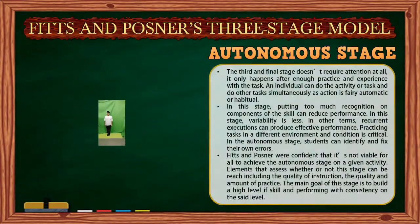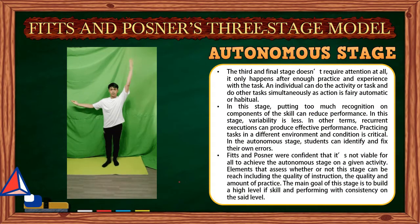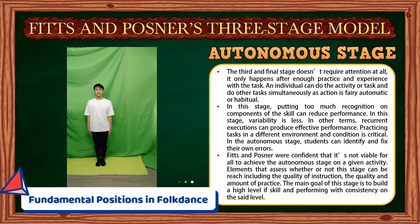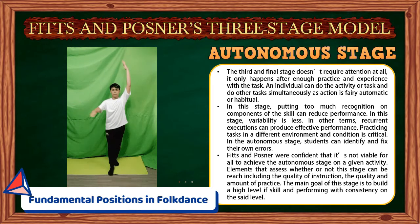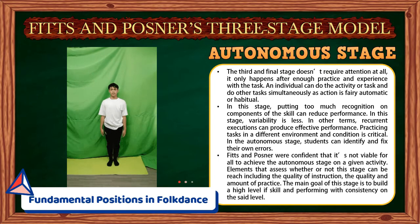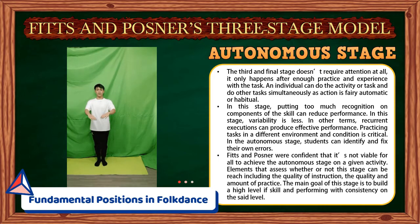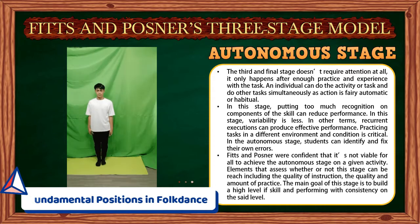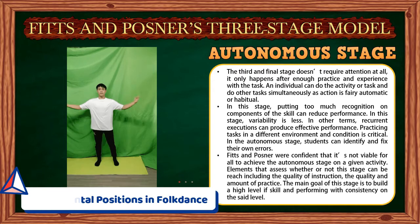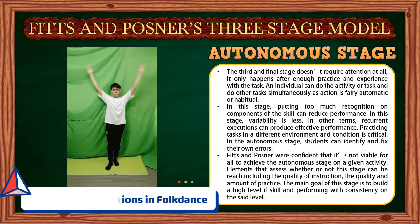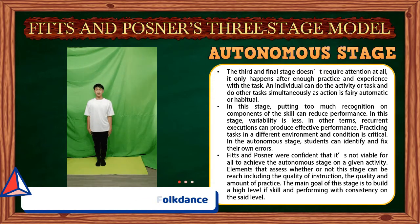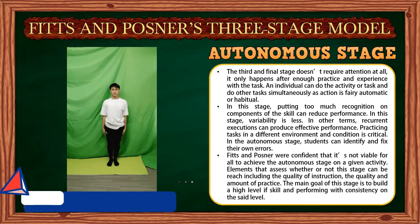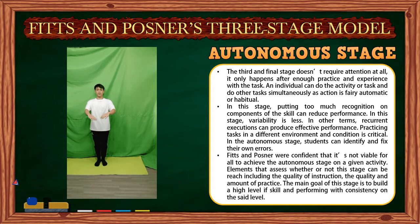The third and final stage, the autonomous stage, doesn't require conscious attention. It only happens after enough practice and experience. An individual can perform the activity while doing other tasks simultaneously, as the action becomes very automatic or habitual. Placing too much recognition on components of the skill can reduce performance. Variability is less, and recurrent executions produce effective performance. Practicing tasks in different environments and conditions is critical. Students can now identify and fix their own errors. Fitts and Posner noted it is not viable for all to achieve the autonomous stage, as it depends on the quality of instruction and the quality and amount of practice.